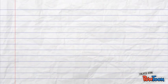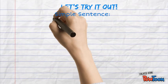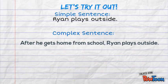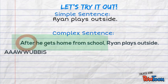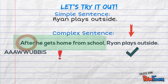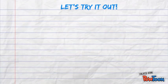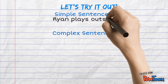Let's practice the test on our complex sentence. Notice there is a comma and a period. I'll look at the dependent clause first: 'After he gets home from school' — not a complete thought, so it doesn't pass. Then 'Ryan plays outside' — it passes! It's a complete thought and it's my independent clause.